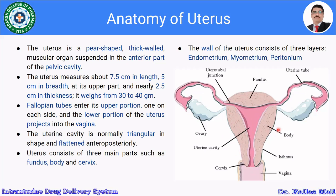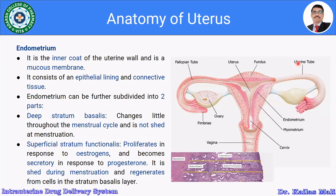The uterus consists of three main parts: fundus, body, and uterine cavity. The wall of the uterus consists of three layers: the innermost endometrium, the middle myometrium, and the outermost peritoneum or perimetrium. Looking at the figure, the fallopian tube enters into the triangular uterine cavity.